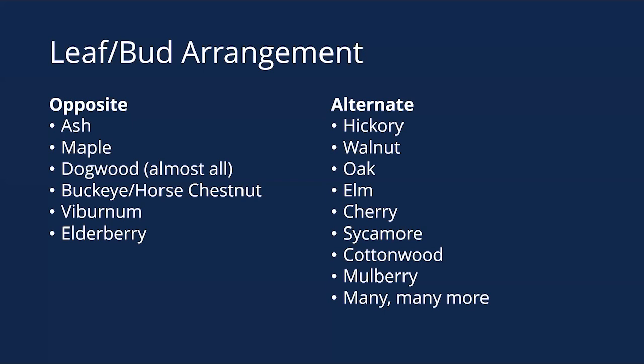If it's alternate, you have a lot more options: hickories, walnuts, oaks, elms, cherries, sycamores, and so forth. There are a lot of our trees that are alternate. So it's always nice when you find one that's opposite, because you know you have a smaller list to choose from. But again, bud arrangement is the first thing you're looking for.